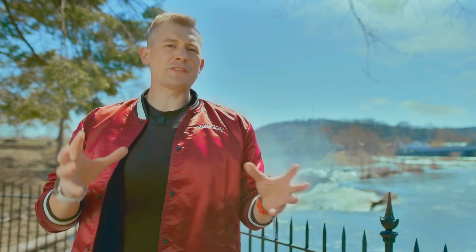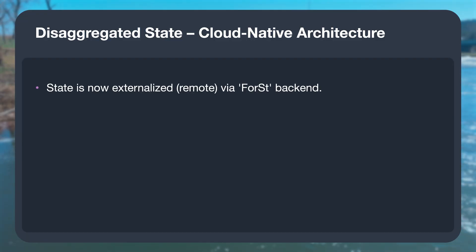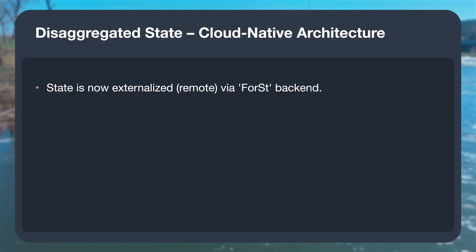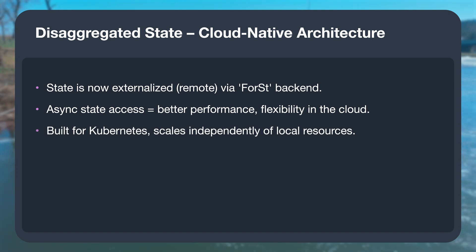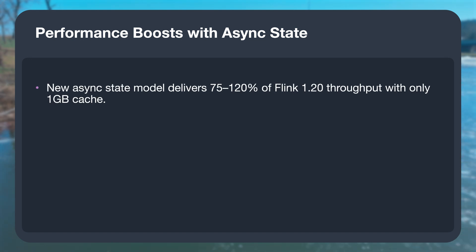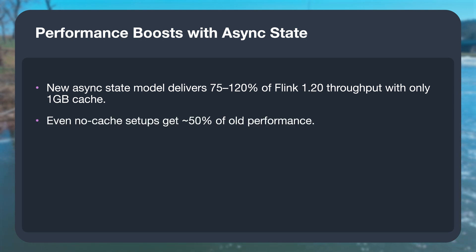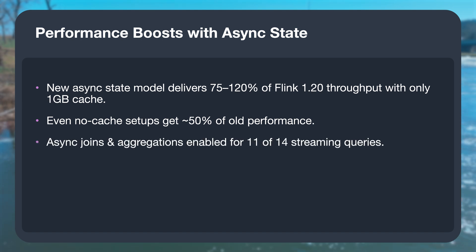One of the biggest changes in Flink 2.0 is disaggregated state. It sounds fancy, but what it actually means is that Flink separates compute from state storage. Instead of saving everything to local disk, it can now store it remotely in cloud storage like S3 or HDFS. Even better, it uses asynchronous state access, so Flink can read and write state in parallel without blocking processing. This is huge for deployments on Kubernetes and makes Flink much more cloud-native. In benchmarks, with just one gigabyte of cache, you get up to 120% throughput increase compared to Flink 1.20. Even with no cache, it still hits 50% higher throughput.